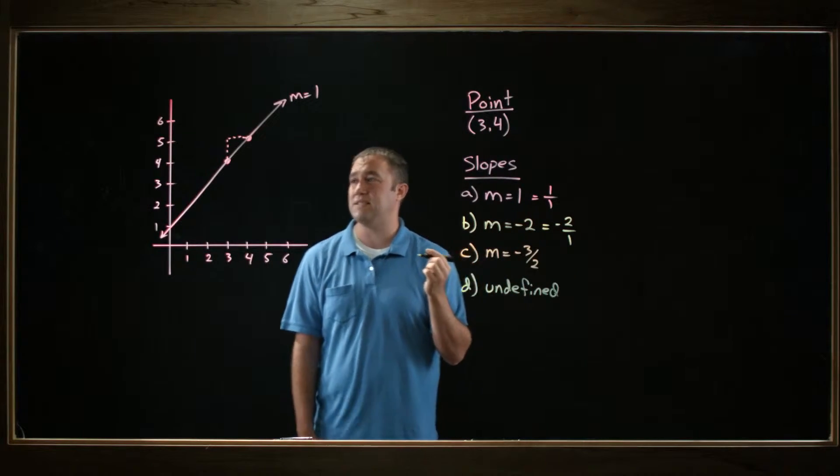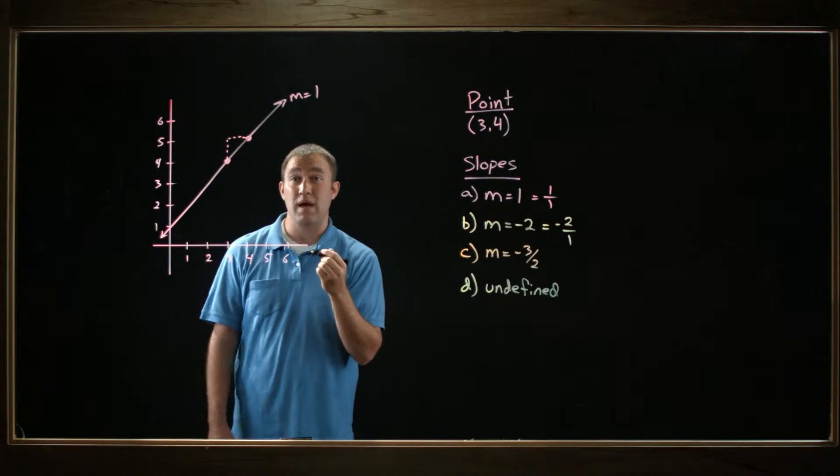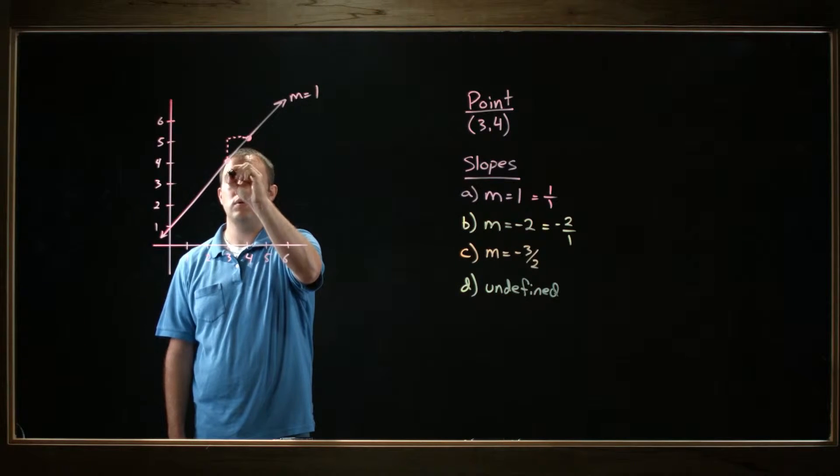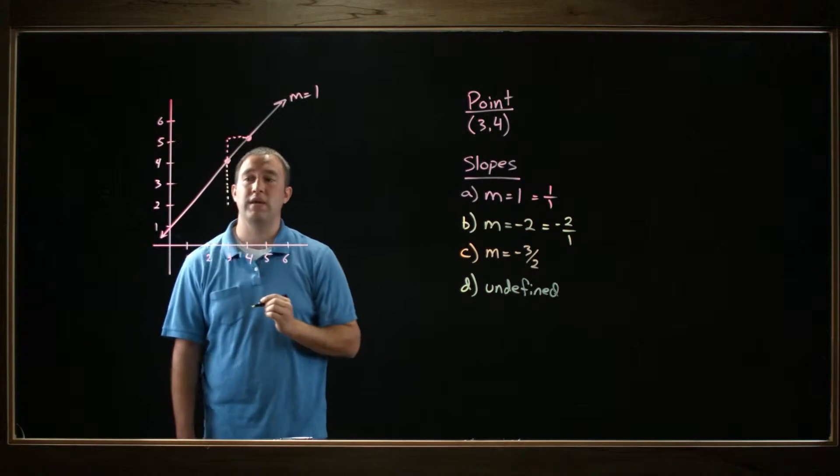So what does it mean to rise negative 2? Well, if I'm going to rise a negative amount, then I must go down. So I'll go from this point (3, 4) and I'll go down 2, all the way down there.